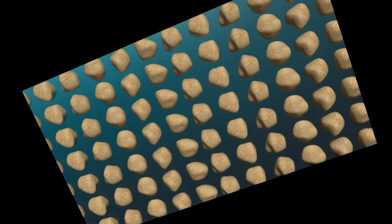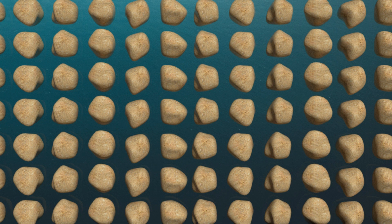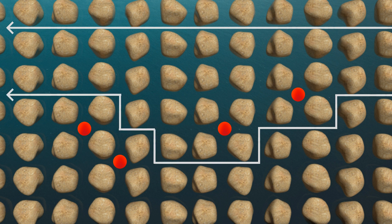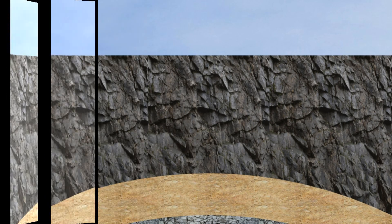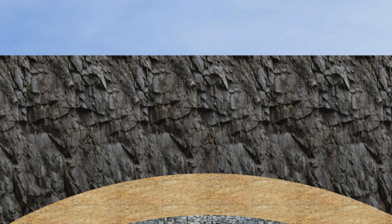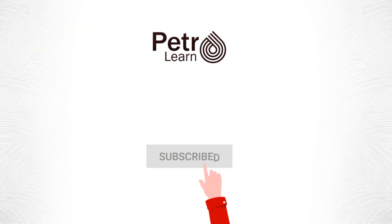Number six: rock tortuosity. It is a measure of the geometry complexity of a rock — the more tortuous it is, the harder the flow of fluids, and hence the lower the permeability. As discussed before, porosity is essential to calculate the original oil in place; however, we can't know the actual reserves that can be produced from a specific reservoir without knowing permeability.